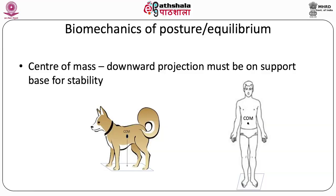The center of mass must be maintained at a particular position. When standing on two legs, or a dog standing on four legs, points of contact form a support base. For a dog on four legs, there are four points of contact forming that base. The center of mass must overlie the support base to be stable; if it falls outside the support base, the body becomes imbalanced and tends to fall.